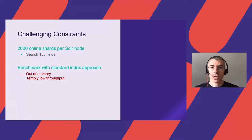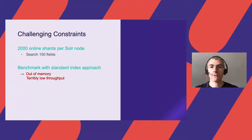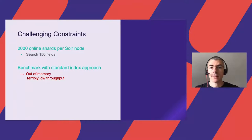So we have challenging constraints: 2000 online shards per Solr node, while searching more than 150 fields. Our first approach was to use the standard Lucene index. We benchmarked it with our projected data shape and scale, and as anticipated, it failed. The node went quickly out of memory with terrible Lucene search query throughput.